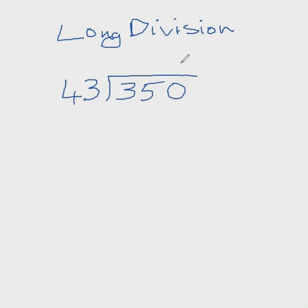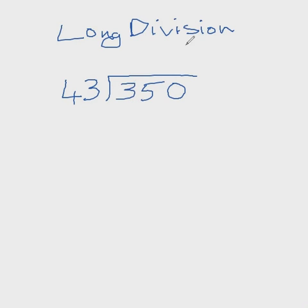The second thing we need to do is estimate how many times does 43 go into 350? One way to estimate this is to ask yourself: how many times does 4 go into 35? And the answer is 8. So we will try that and see if that works. We're going to write our 8 here. The next step is to multiply 43 by 8, just to see if that works.